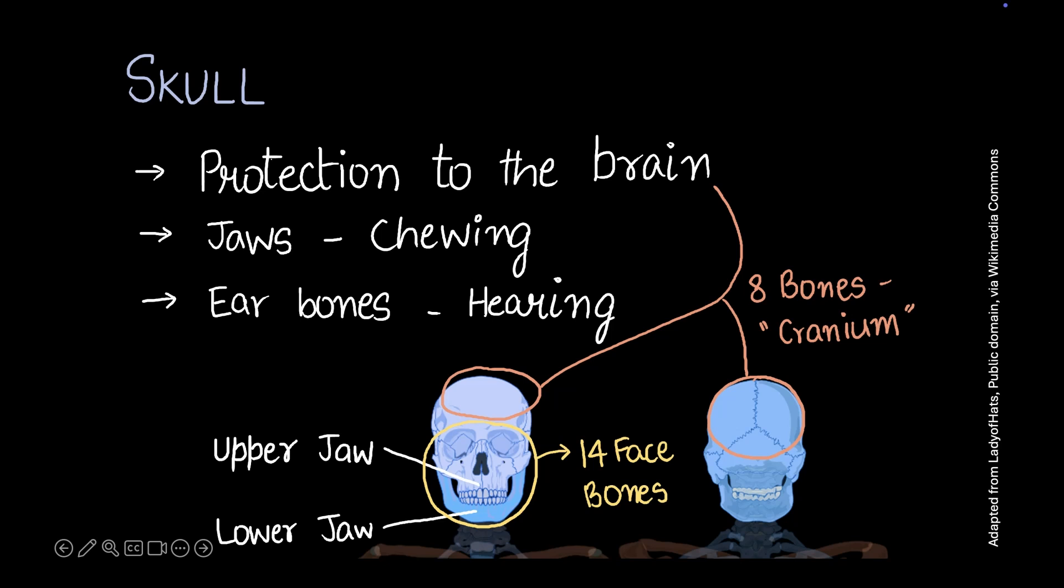Now let's move to the next set of bones which are part of the axial skeleton, and that's the vertebral column. The vertebral column is just a fancy word for backbone. Most of us know it as the backbone.